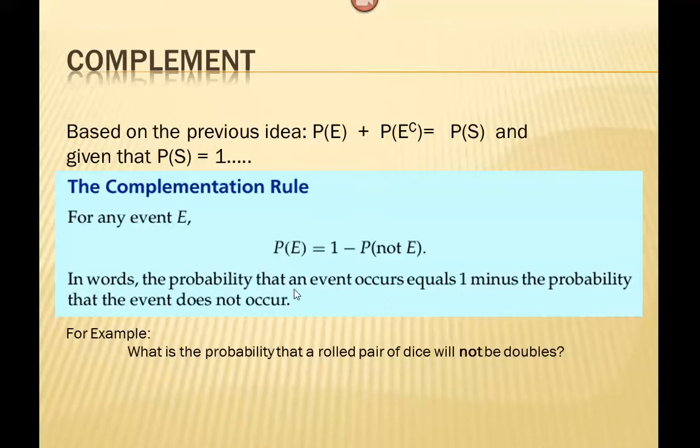One example that we can pull up from the previous lesson was that we looked at the sample space of rolling two dice. If you remember that big sample space we had of 36 possible outcomes, we looked at how many outcomes comprised the event doubles. Here we're looking for the probability that the dice will not be a doubles. E, my event, is not doubles, and so its complement would be that we would get doubles. We saw that there were six ways that we could get doubles. So the probability that our event doesn't occur, that we get doubles, is 6 out of 36, which is 1/6.